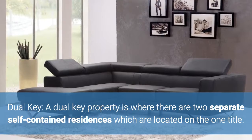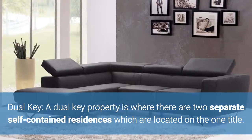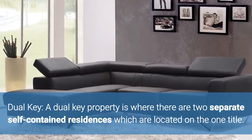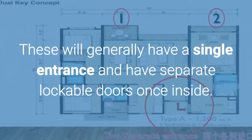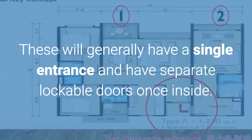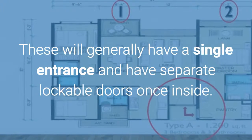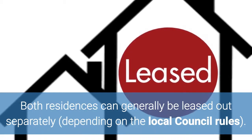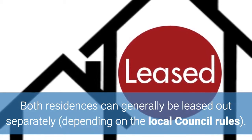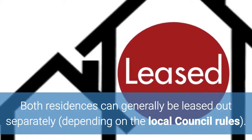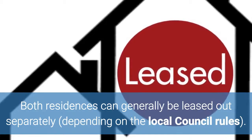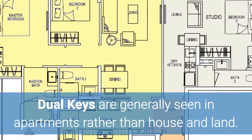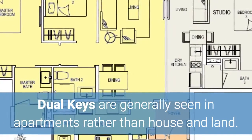A dual key property is where there are two separate self-contained residences located on the one title. These will generally have a single entrance and have separate lockable doors once inside. Both residences can generally be leased out separately depending on local council rules. Dual keys are generally seen in apartments rather than house and land.